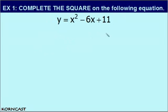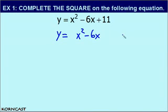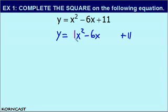If you recall, the first step is to kick out the constant term, which in this case is 11. Now the purpose of that is to give us some room to work with. Step 2 of our completing the square process is to factor out an A term if necessary. The A term in this equation is 1, so there's no need to do step 2.